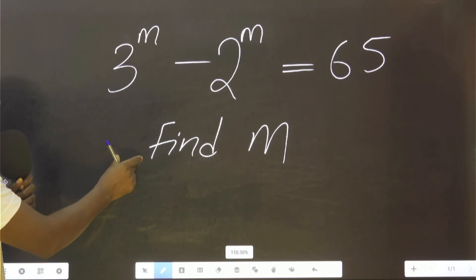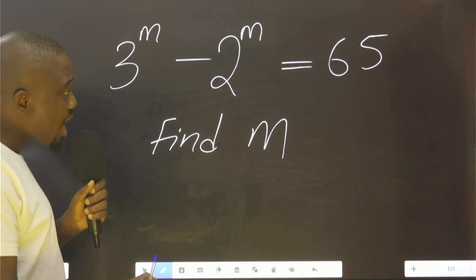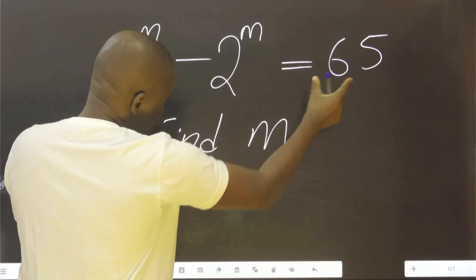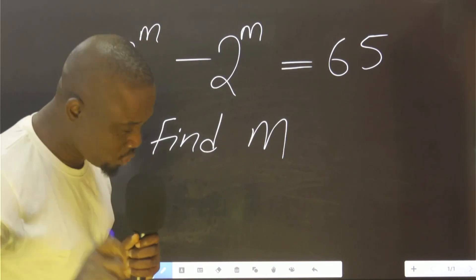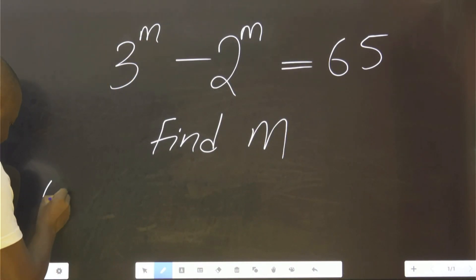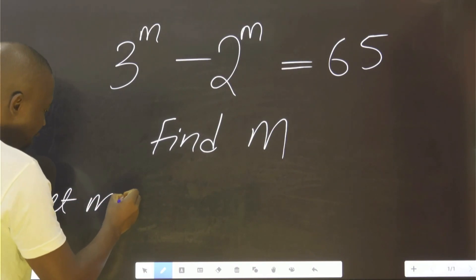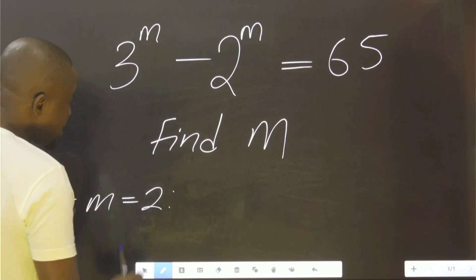Let's see. The first thing we need to do, because this value is small, let's start by saying m equals 2. Let m be 2, then we try for 2.